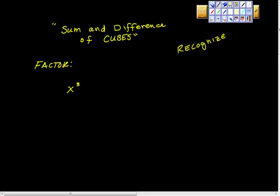This is x³ - 8. This is the sum and difference of cubes, so this is a difference. Can you see that this is x³ - 2³? There's a difference of cubes here. 8 is a perfect cube, isn't it?